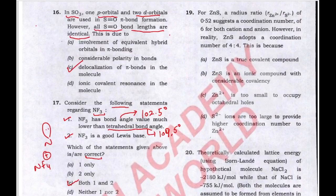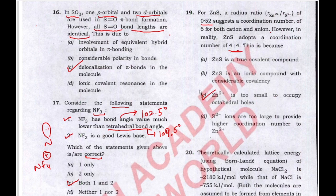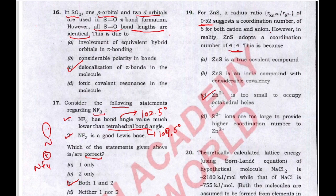In the next question, for zinc sulfide, the radius ratio is 0.52, which suggests a coordination number of 6 for both cation and anion. However, in reality, zinc sulfide adopts a coordination number of 4. This is because zinc²⁺ is too small to occupy octahedral holes, so it occupies tetrahedral holes instead. In both structures of zinc sulfide, the coordination number is 4:4. The correct answer is C.